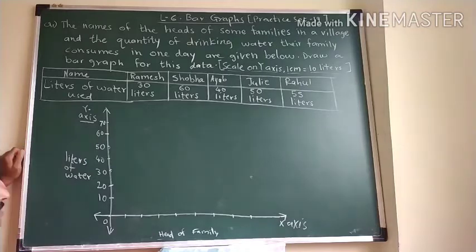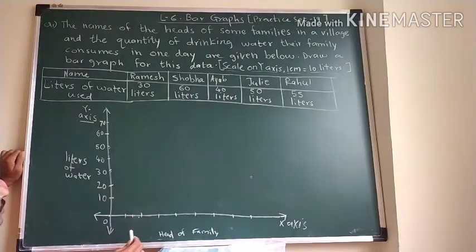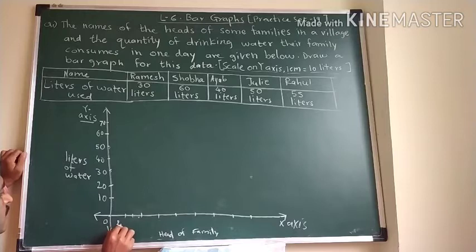First one is Ramesh. We have to give 1 cm then we can draw 1 cm bar or 1.5 cm bar we can draw. So only are there 5. Then this 10 will be required. We are not having the 10, so half centimeter bar we can draw for Ramesh.